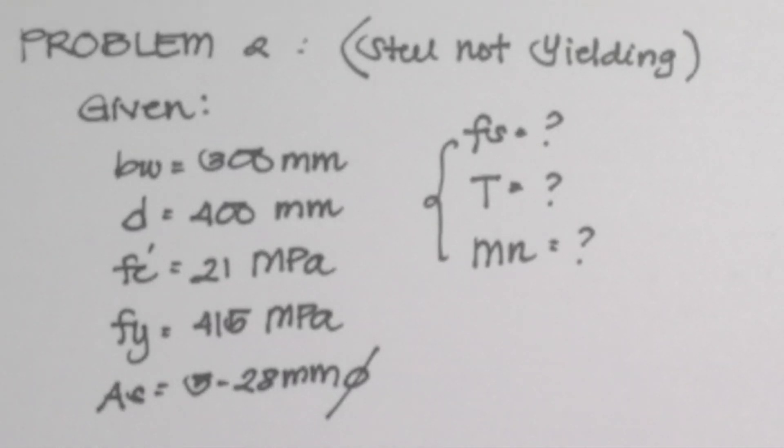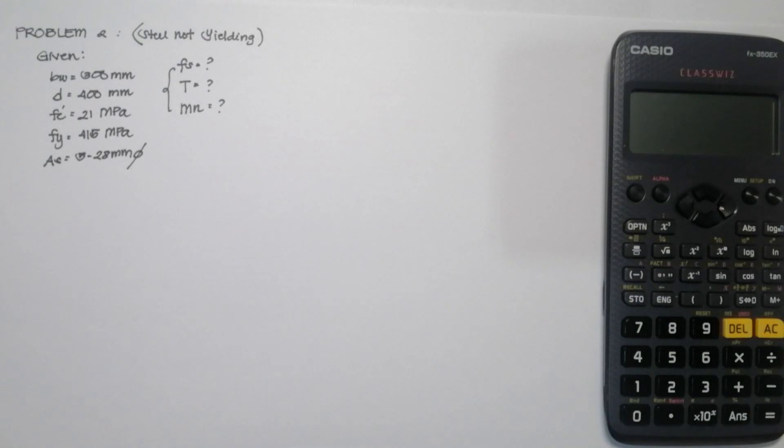So we are tasked to find the value of Fs as the stress in the steel, T as the tensile force in the beam, and Mn as the nominal moment capacity of the beam.